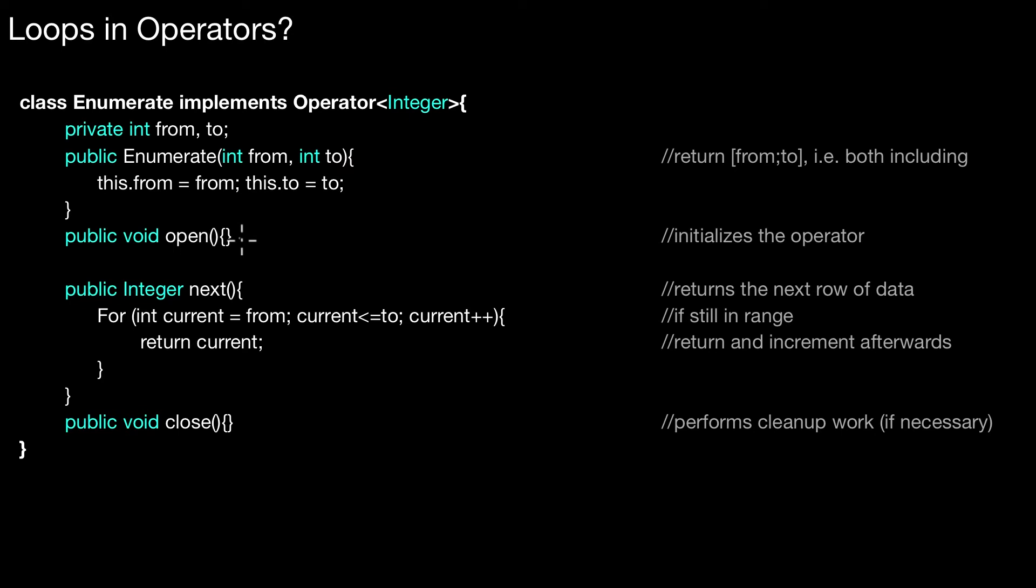I could run a loop - initialize it iterating over current starting with from, check the condition, and always increment this variable. I enter the loop and return this current variable. Of course this doesn't make sense at all. Let's write it down. This is wrong, of course,